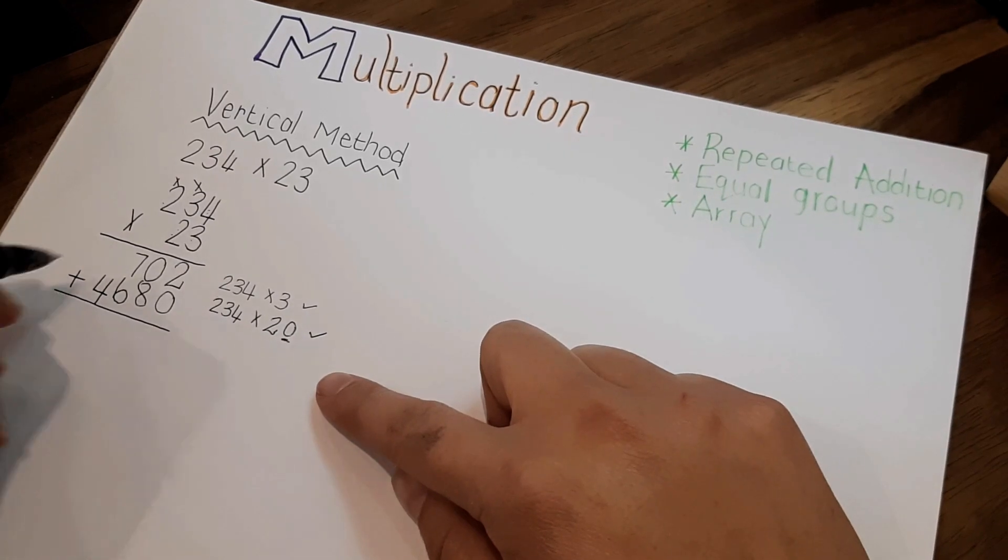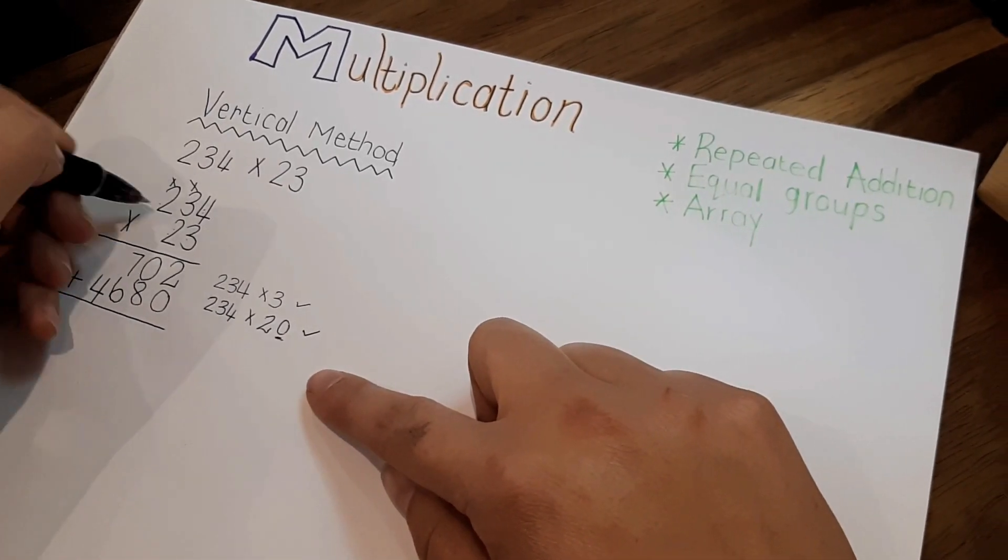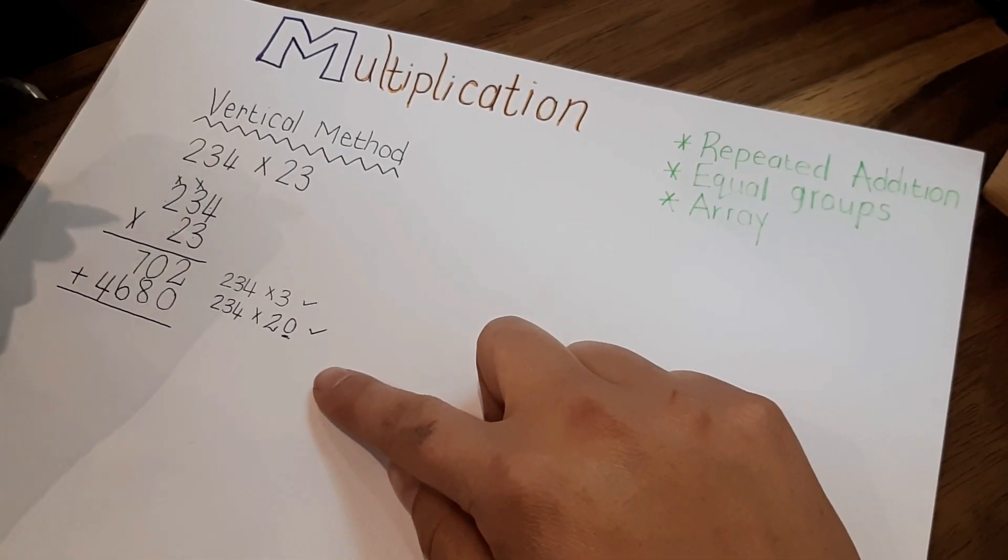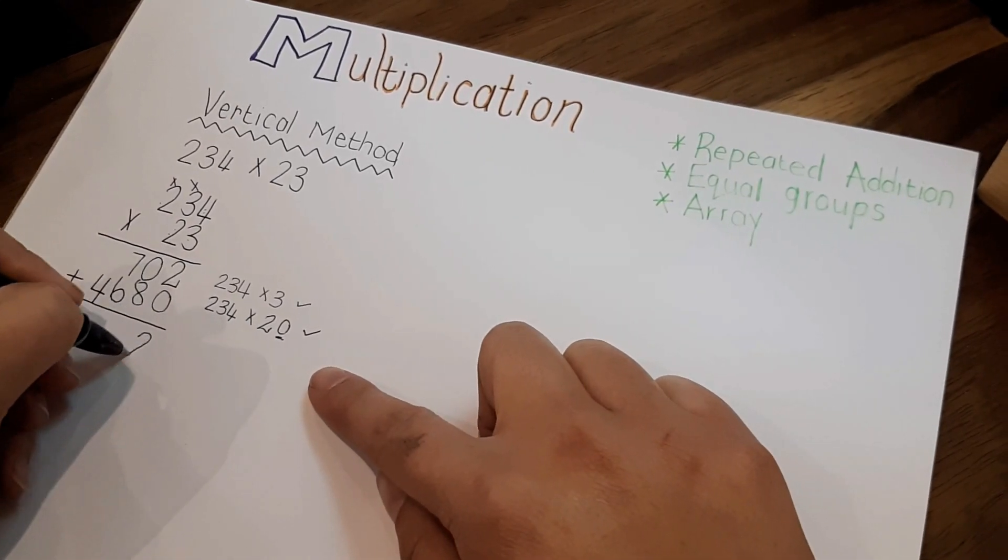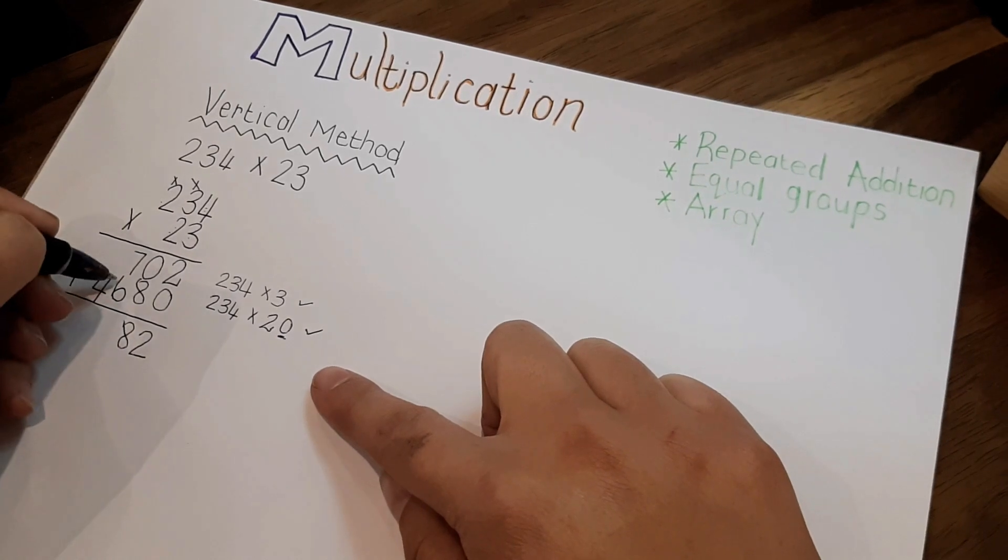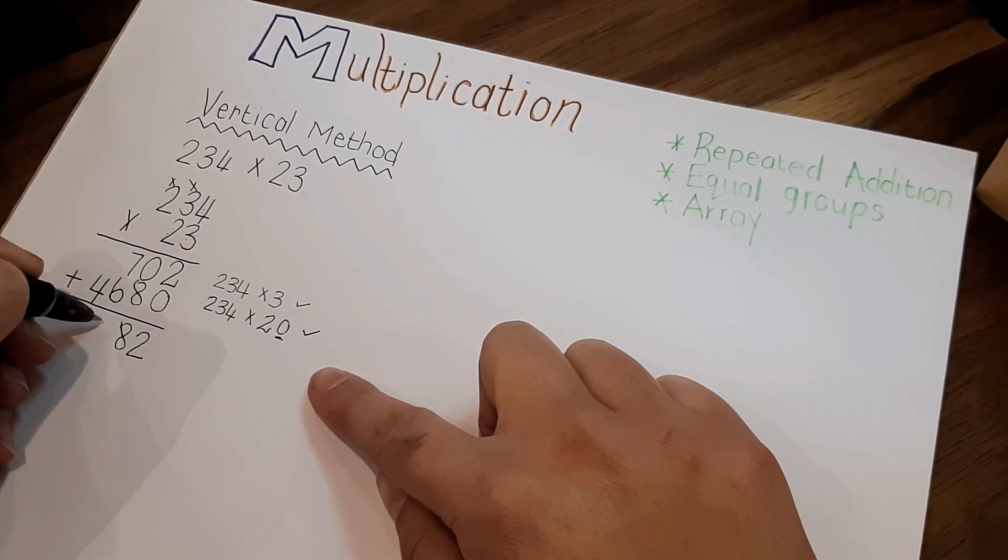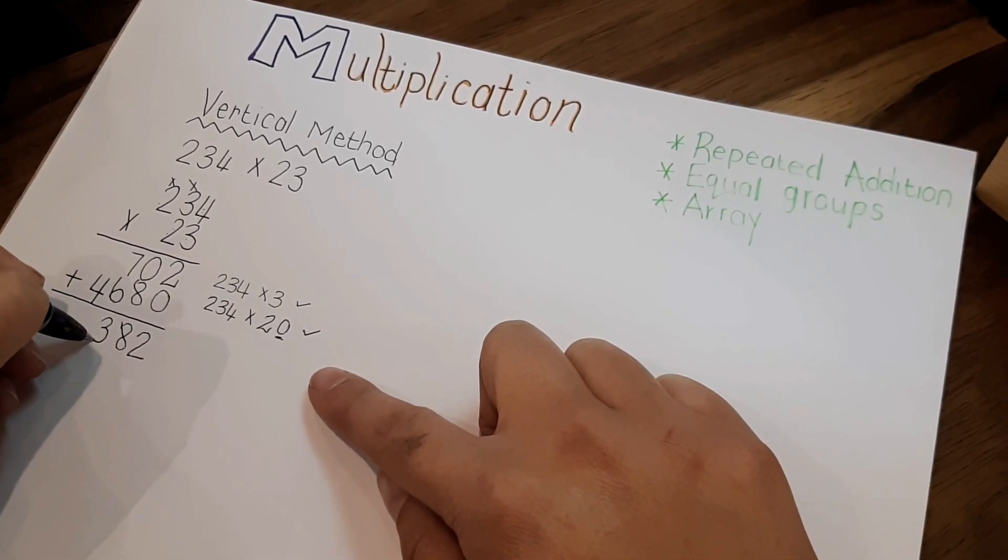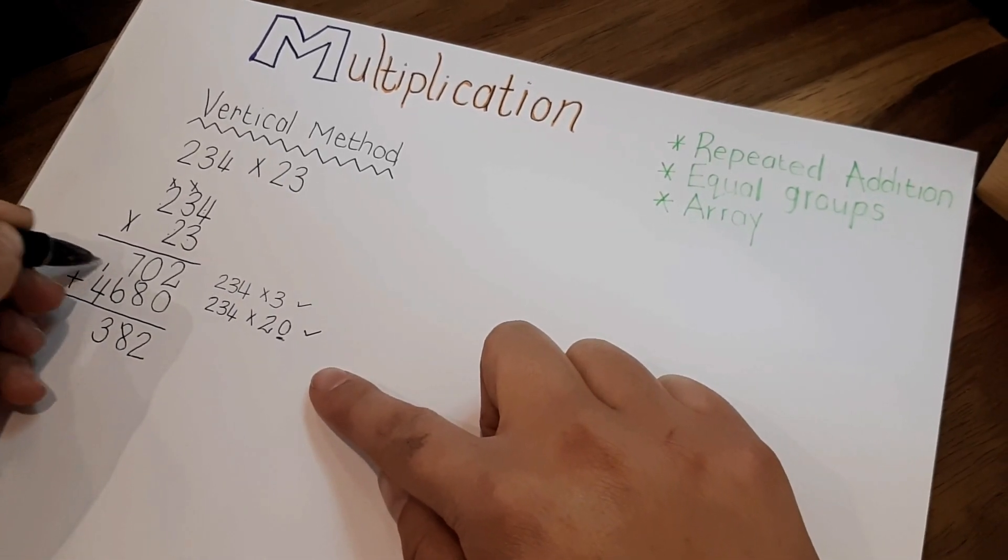So we've got one next step done. Now we have to add the two numbers because we don't want them separately, we want the number 234 times 23. 2 plus 0 is 2, 0 plus 8 is 8, 7 plus 6 is 13. Write the 3, carry over the 1.